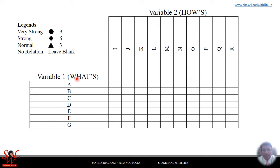Variable 2 is shown by columns I, J, K, L, M, N, O, P, Q, R. You can say that Variable 1 represents what — the customer expectations — and Variable 2 represents how — how can we satisfy those customer expectations. These cells analyze how relevant the 'how' is to the 'what', so we can better fulfill the customer expectations.